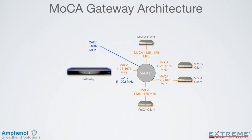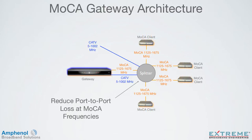If there's no need for CATV frequencies to the MOCA clients, and if we filter out the CATV frequencies to those outlets, then any ingress at CATV frequencies at those outlets cannot travel back on the return path, thus reducing ingress in the return plant. The splitter ports feeding the MOCA clients do not need CATV frequencies. We can tune those ports only for MOCA frequencies and reduce the port-to-port loss at the MOCA frequencies.